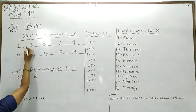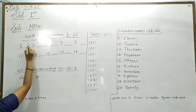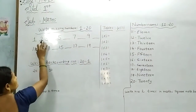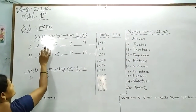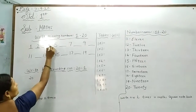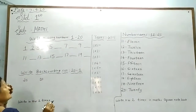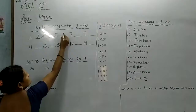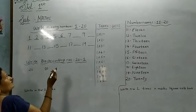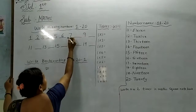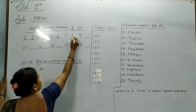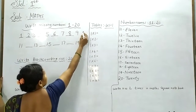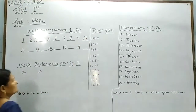Number one — after one, two. After two, three. After three, four. After four, five. After five, six. After six, seven. After seven, eight. After eight, nine. After nine, ten. That's it.